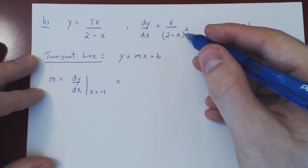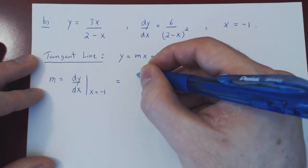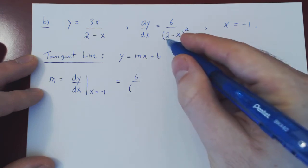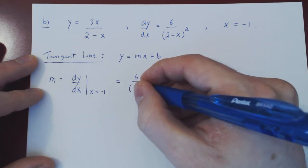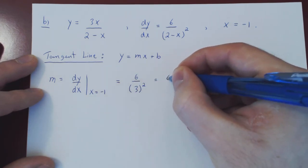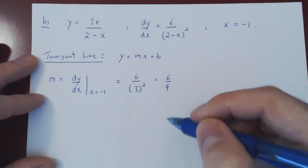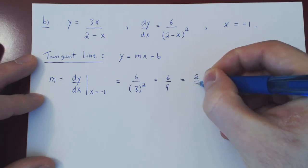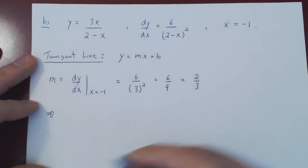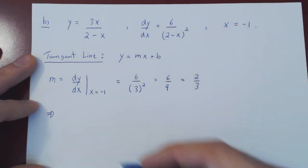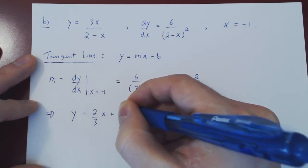Our derivative is 6 over 2 minus x all squared, and now we replace x by the value of interest, negative 1. So we have 6 over 2 minus negative 1 — that is 2 minus minus 1, which is 2 plus 1, therefore 3. So 3 squared gives us 6 over 9 as our slope. You can simplify a little bit — cancel a 3 on top and on the bottom — and you have a slope of 2 thirds. Our tangent line has a slope of 2 thirds at x equals negative 1, so y equals 2 thirds x plus b.